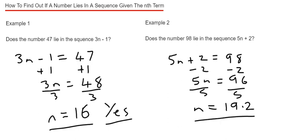So this time, we have a decimal answer as our value of n. So this is telling us that the number 98 will not lie in the number sequence.